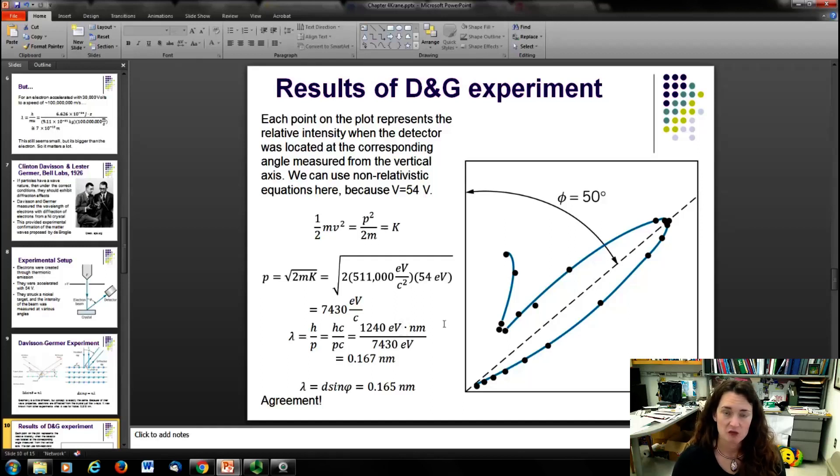Okay, and you can get that by using h = 4.136 times 10^-15 eV seconds, switching those units over to eV. And then multiplying times the speed of light, 3 times 10^8 meters per second, but then shifting the units over from meters per second to nanometers per second. And you'll end up when you multiply those two things together with 1240 eV nanometers. And now we're going to divide by pc. Well, pc would be 7430 eV for these electrons in the Davisson and Germer experiment. And then when you divide those two numbers, 1240 by 7430, you get 0.167 nanometers.